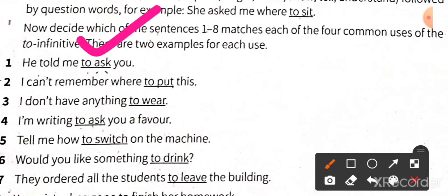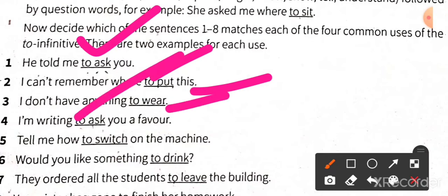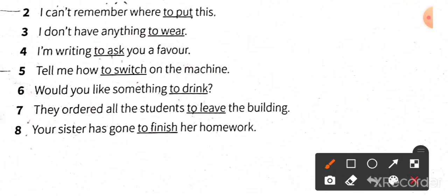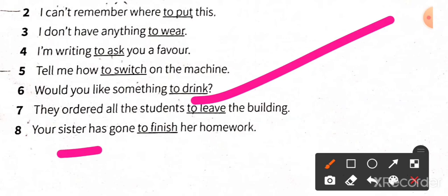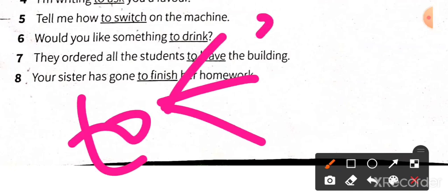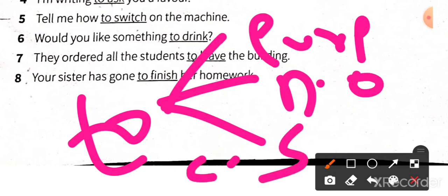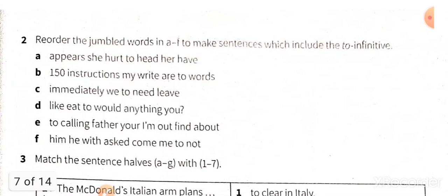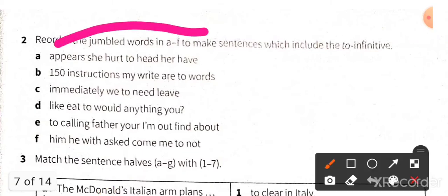So we have two uses of 'to': first, for particular purpose; and second, for direct objects after certain verbs. Also, 'to' follows a noun or pronoun to show what something can or will be used for — for example, 'I would like a sandwich to take to school.' That is again the use of 'to' for purpose. After certain verbs — ask, decide, explain, forget — you have to use 'to': 'he told me to ask you,' 'I can't remember where to put this.'